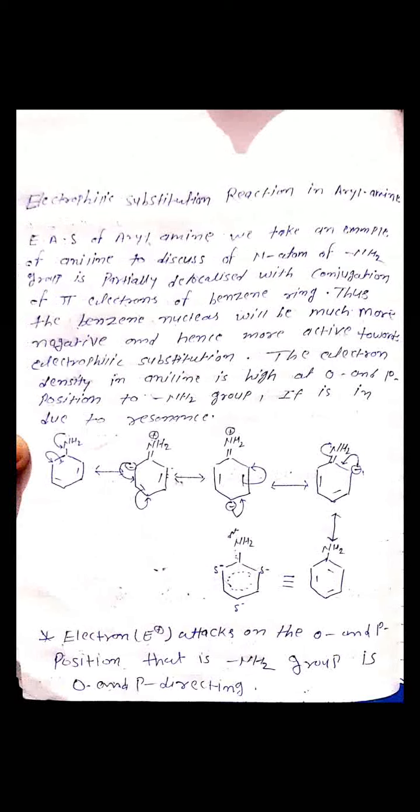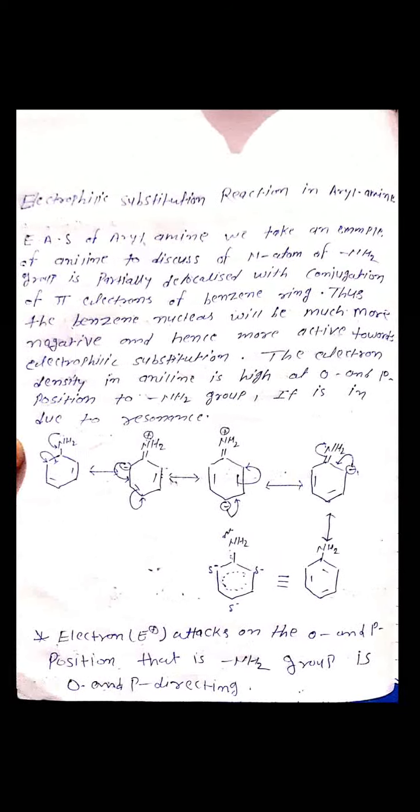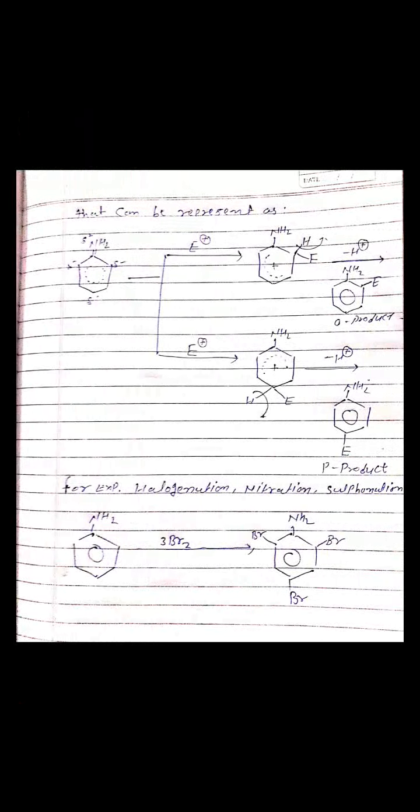The pi-electron delocalization results in negative and positive charges present in the Benzene ring. जब अपन Aniline की resonating structure बनाते हैं तो Ortho और Para position पर negative charge और Meta position पर positive charge होता है। यदि Electrophile का attack कराएंगे तो high density पर Ortho and Para positions पर होगा। Aniline की Ortho and Para position पर negative charge है, तो Electrophile का attack Ortho and Para पर होगा। यदि Nucleophile का attack कराते हैं तो Meta position पर होगा।